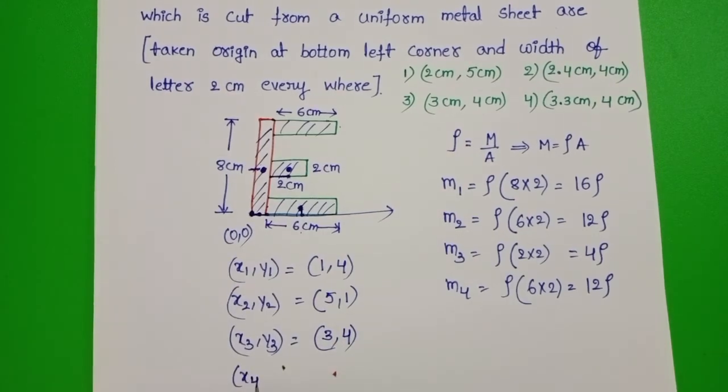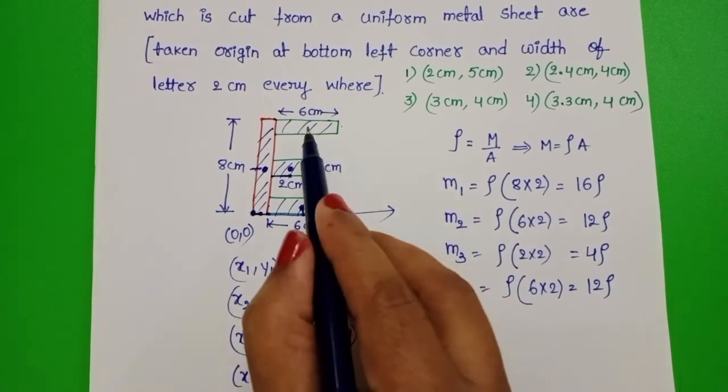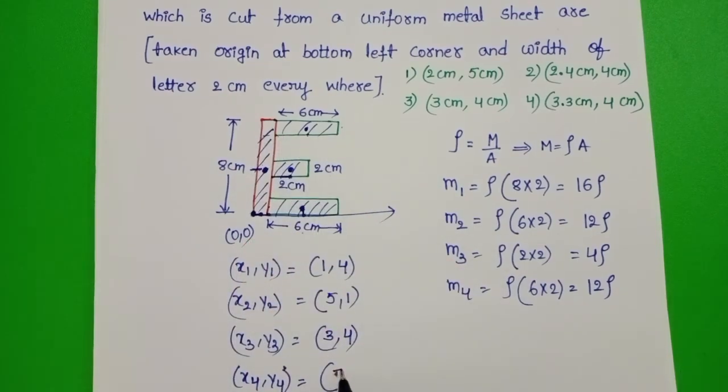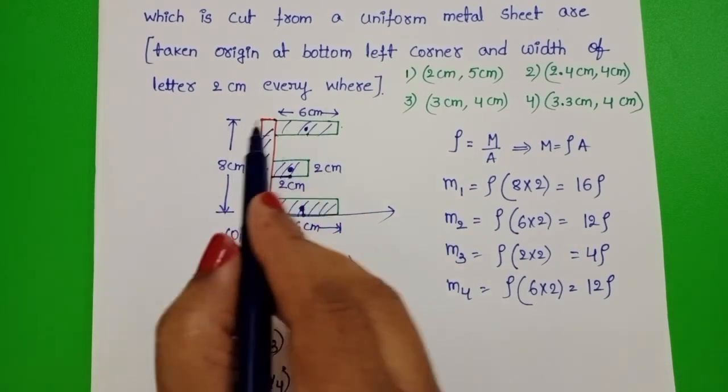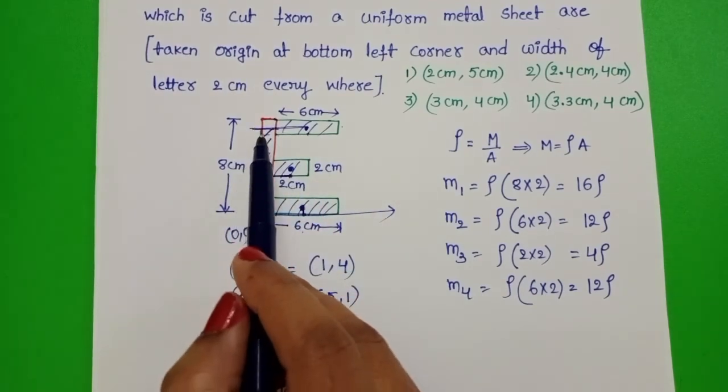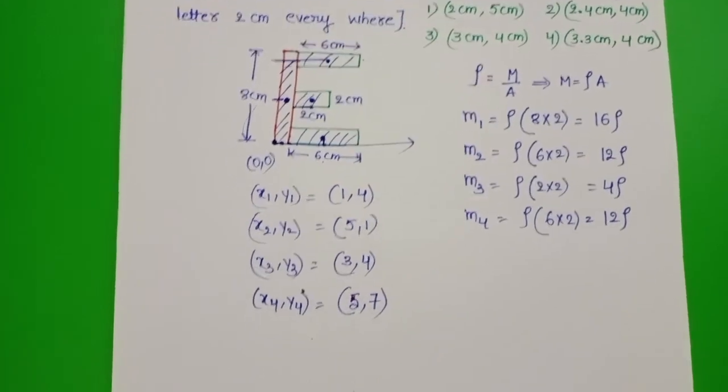x4, y4 equals - x4, this length is 3, which is 3 plus 2, equals 5 cm. So 5, up to this point. From origin to here is 7 cm. So 5, 7.